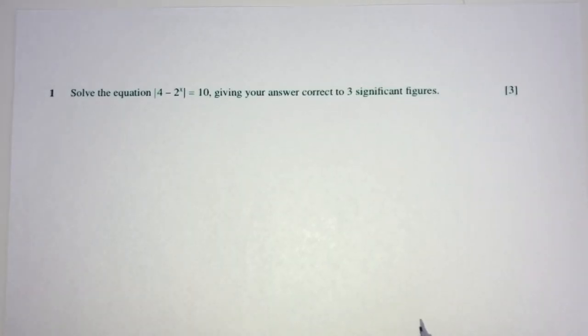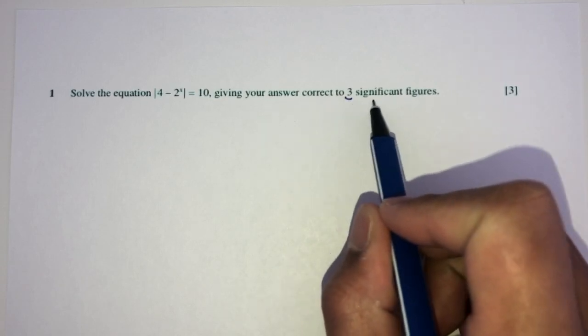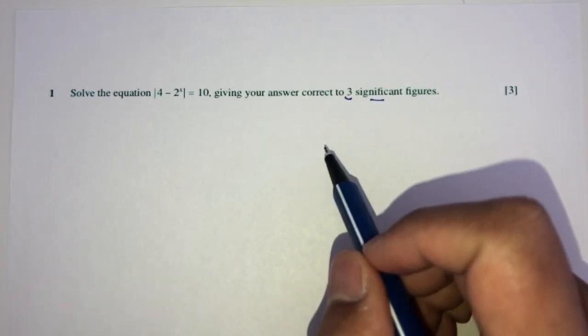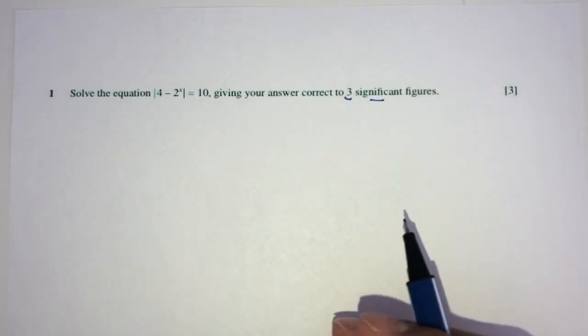Question number one, we have to solve this equation. You can see we have modulus on one side, 4 minus 2 power of x, and then giving your answer correct to three significant figures. Solving means finding the unknown. We have to find the value of x accordingly.